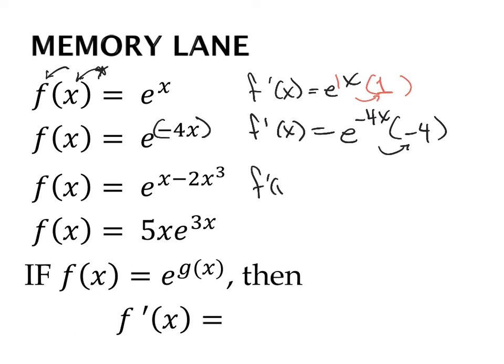So for this one, the first derivative becomes: rewrite the function and chain rule out the derivative of that exponent. The derivative of x is just 1. The derivative of negative 2x cubed is — bring the 3 down — negative 6x squared. Multiplied together, that is your derivative.